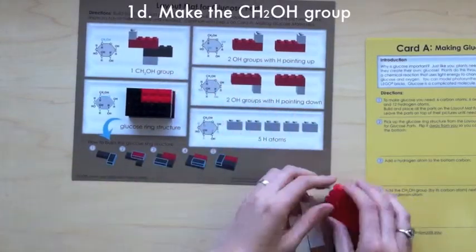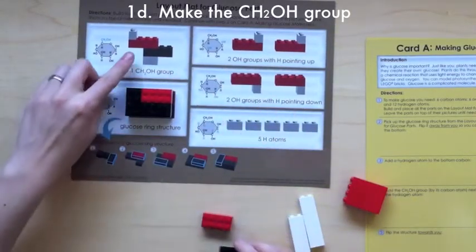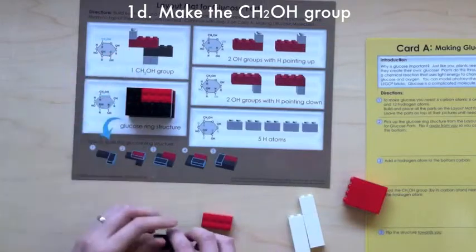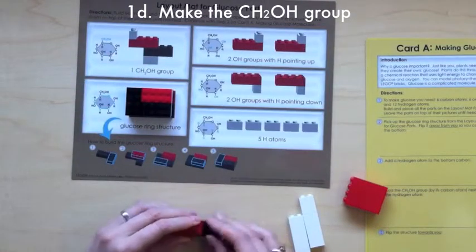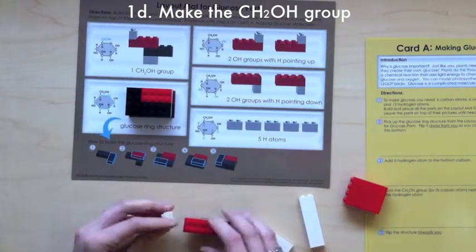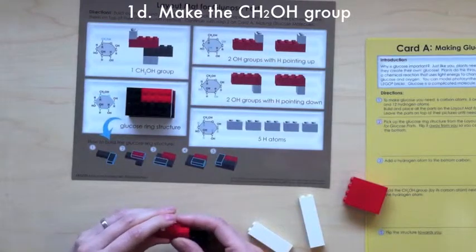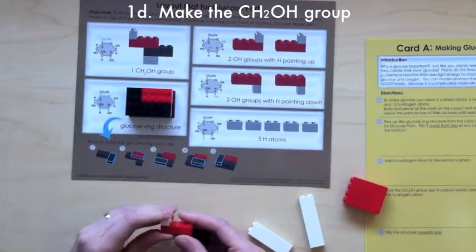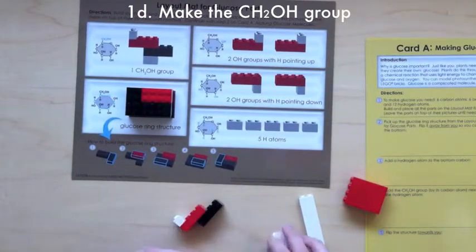Next, make the CH2OH group. Make sure you add 1 hydrogen to the top of the oxygen atom, and 2 hydrogens below the carbon atom.